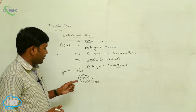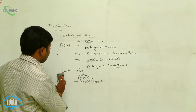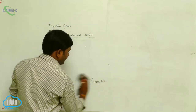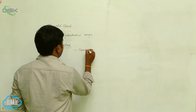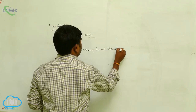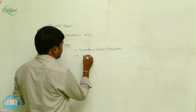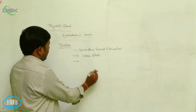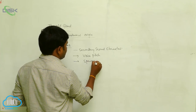The androgens are mainly responsible for the production of secondary sexual characteristics, as well as changes in voice. Another function is the processing of spermatogenesis.